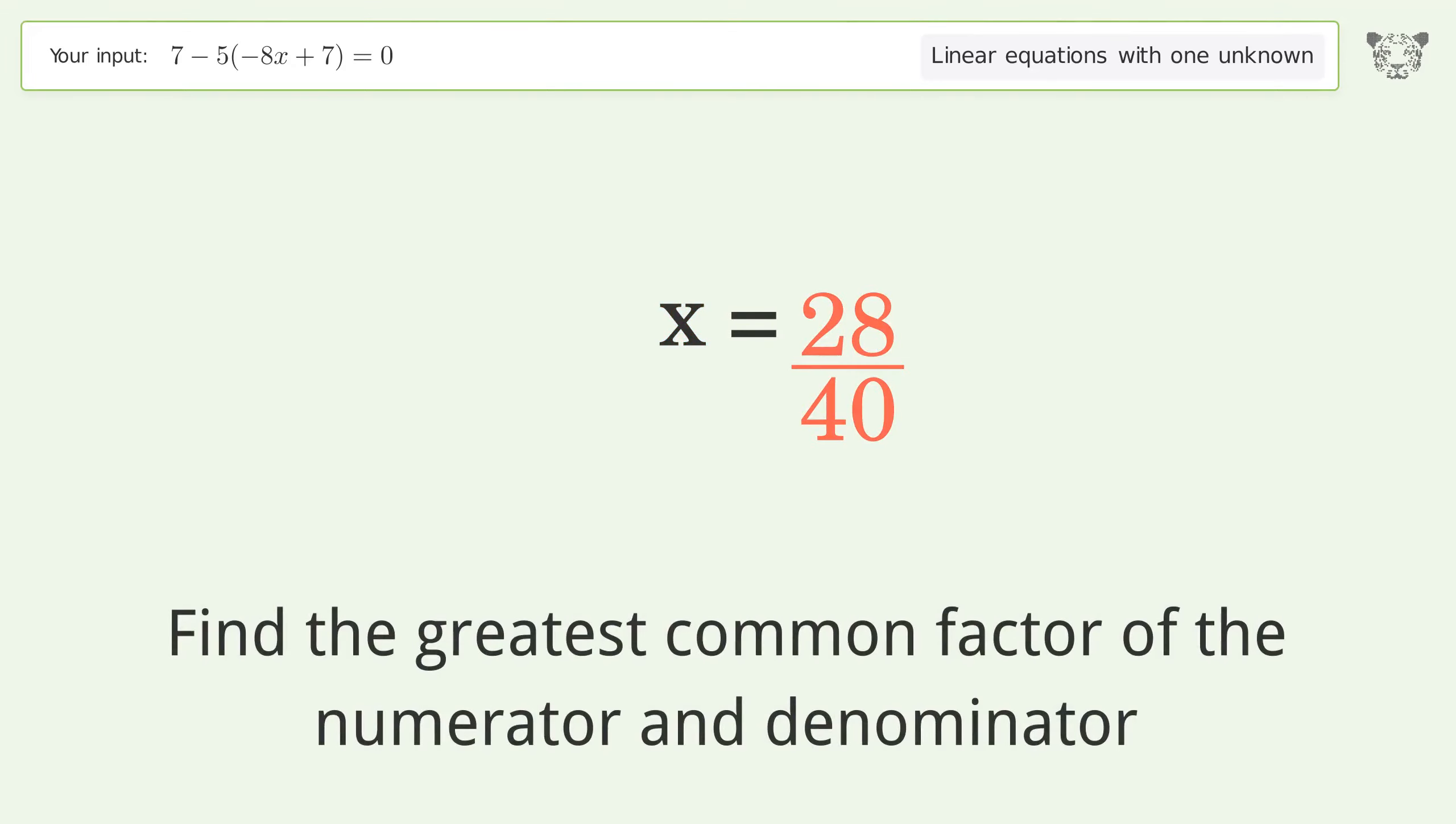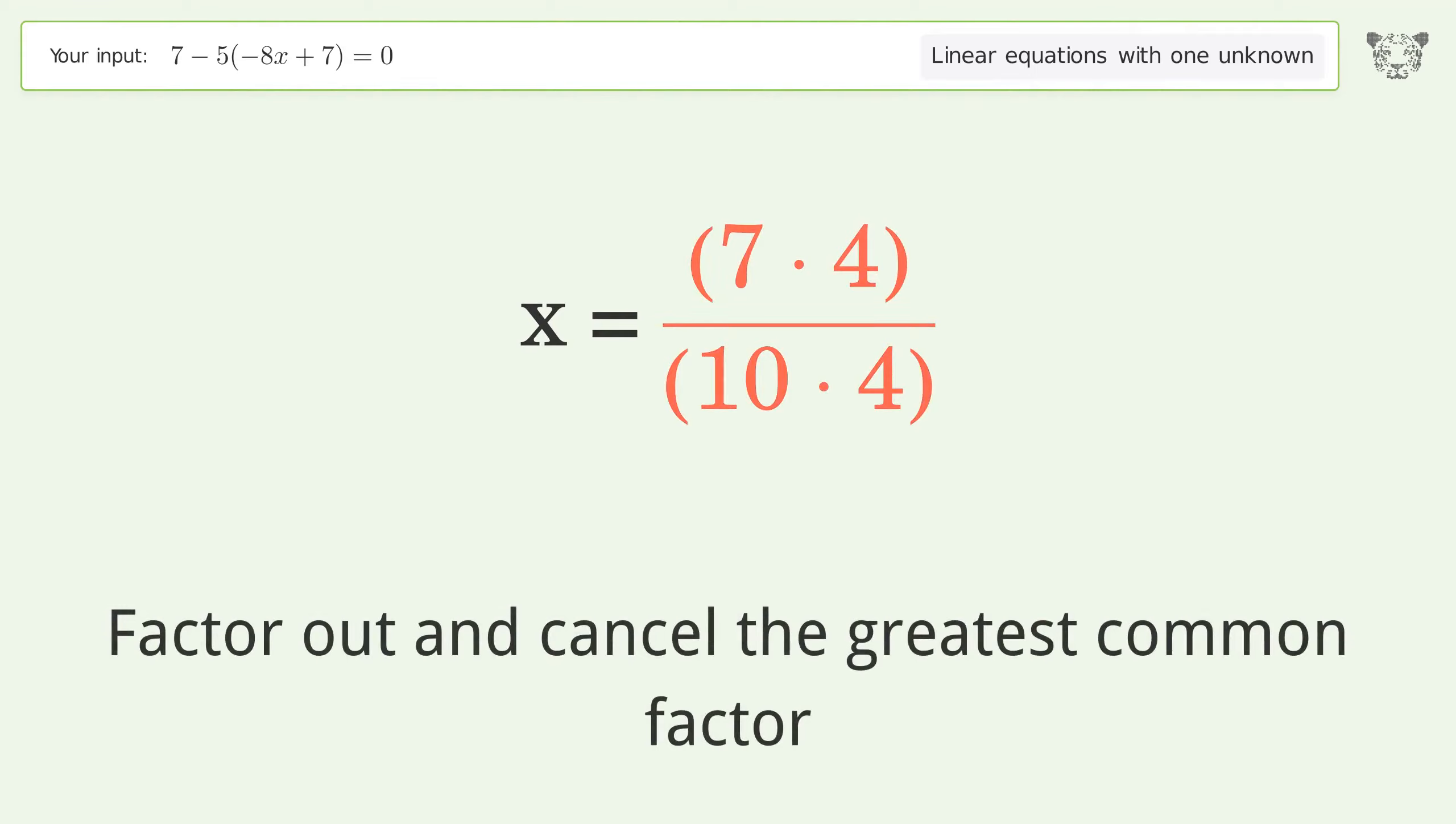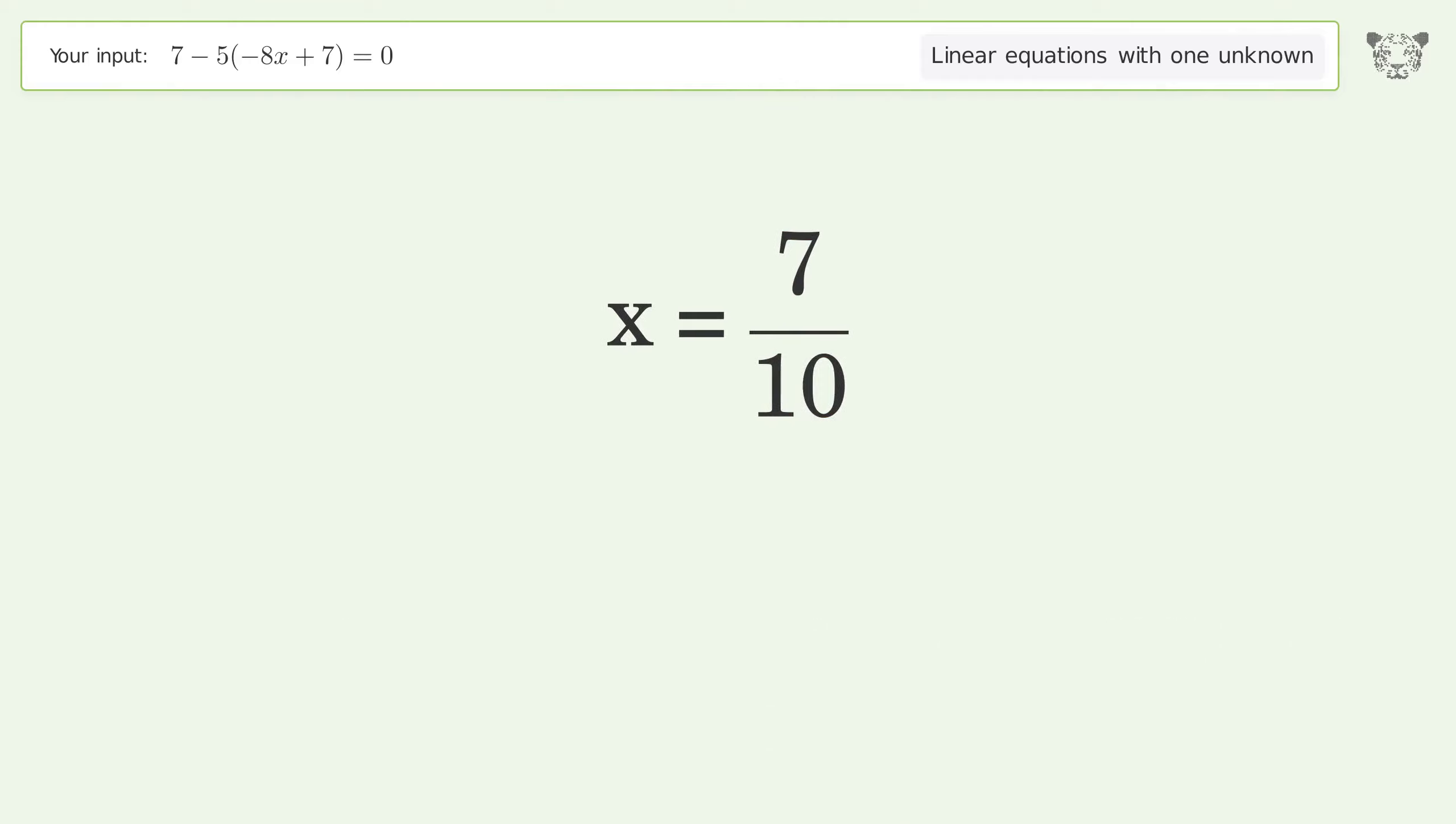Find the greatest common factor of the numerator and denominator. Factor out and cancel the greatest common factor. And so the final result is x equals 7 over 10.